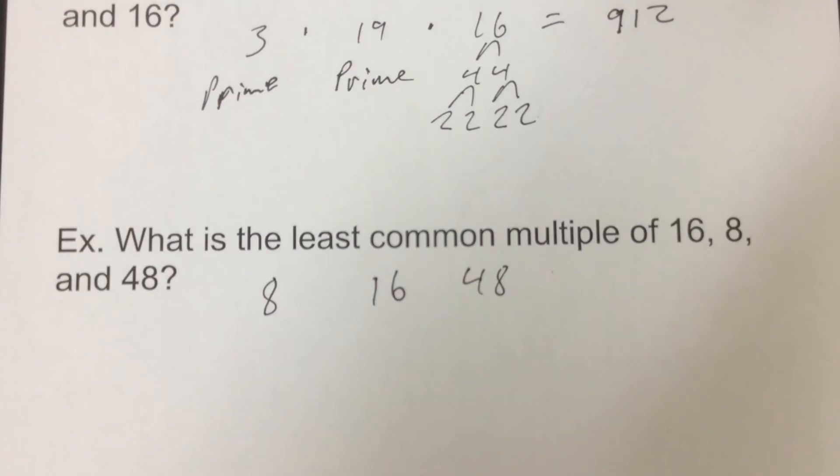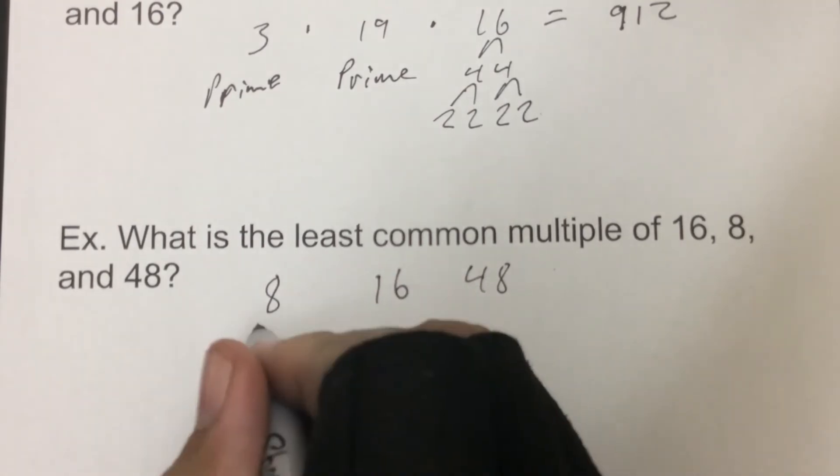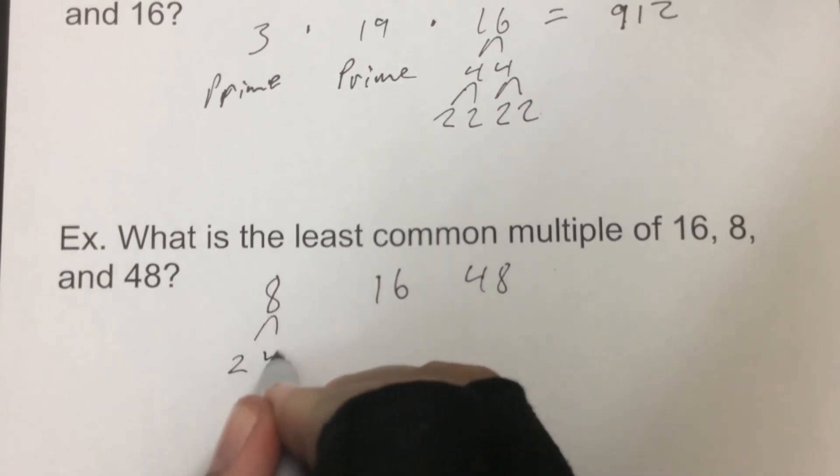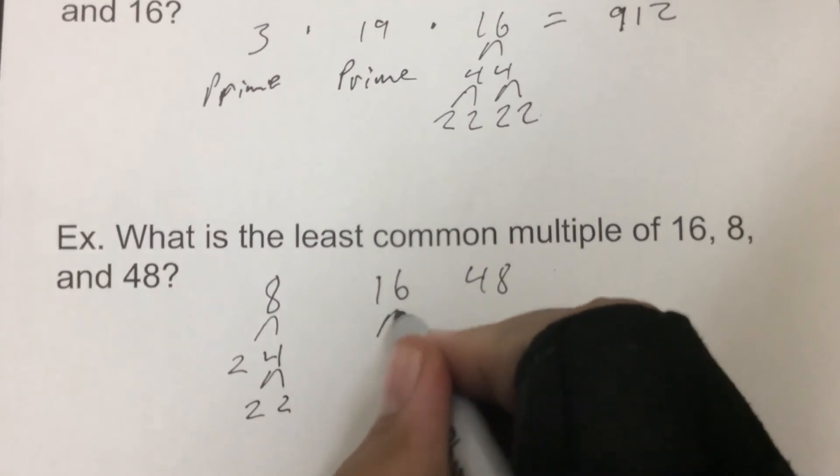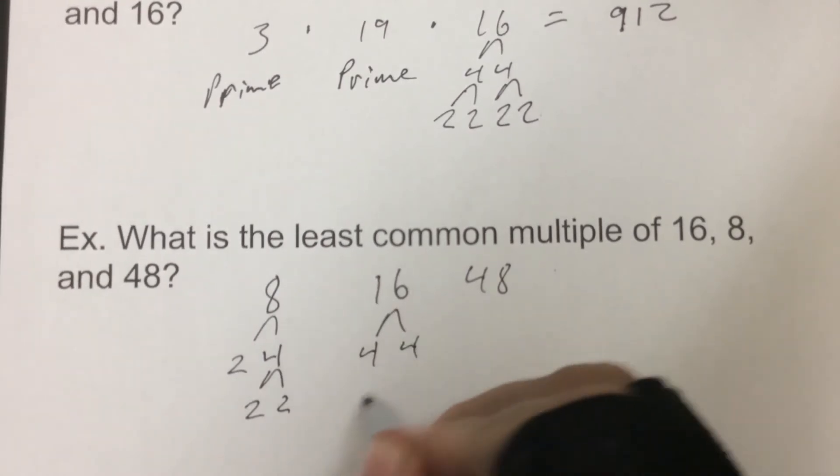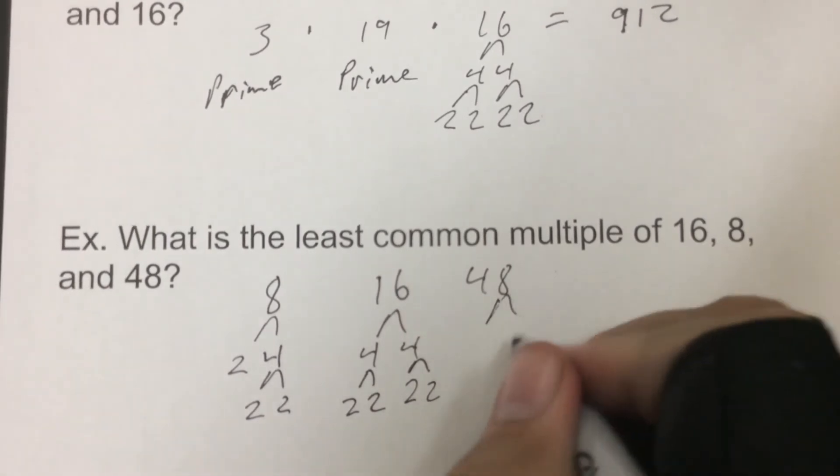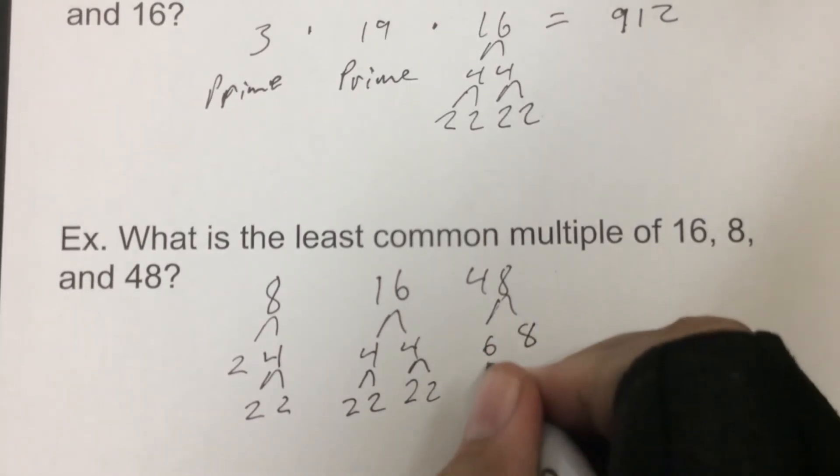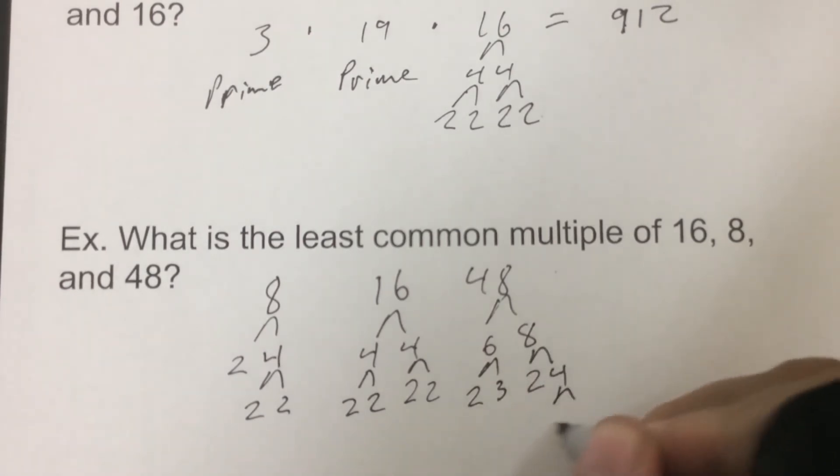We could do the list method and we could find this pretty easy, but I want to show the prime factorization way and show how this all comes together. So 8 would go to 2 and 4, which goes to 2 and 2. 16, we could break down to 4 and 4, which again would be 2 and 2, 2 and 2. 48 would go to 6 and 8, which go to 2 and 3, and 2 and 4, which goes to 2 and 2.